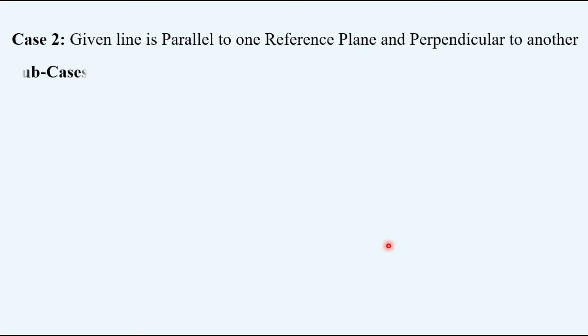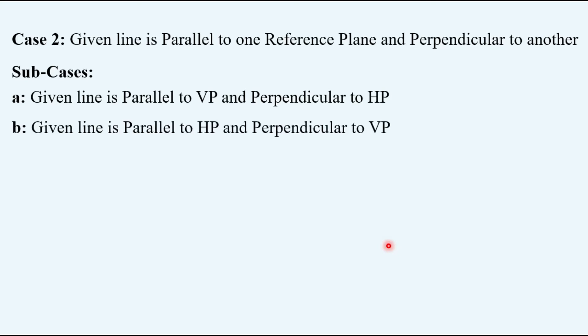Case two has two more sub-cases. Sub-case A: when the given line is parallel to VP and perpendicular to HP. And the vice versa of this can be sub-case two: given line is parallel to HP and perpendicular to VP.